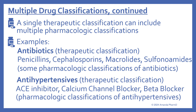A single therapeutic classification can also include multiple pharmacologic classifications. For example, antibiotics is the therapeutic classification, and this can include penicillins, cephalosporins, macrolides, and sulfonamides — those are specifically pharmacologic classifications of those antibiotics. So you have antibiotics as the broad therapeutic classification, and within that you have several different pharmacologic classifications.